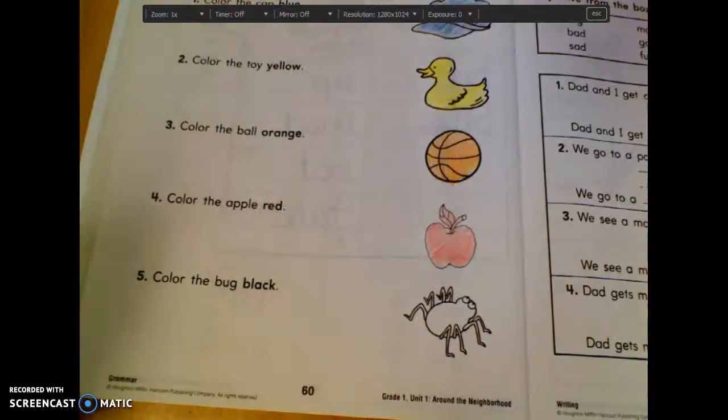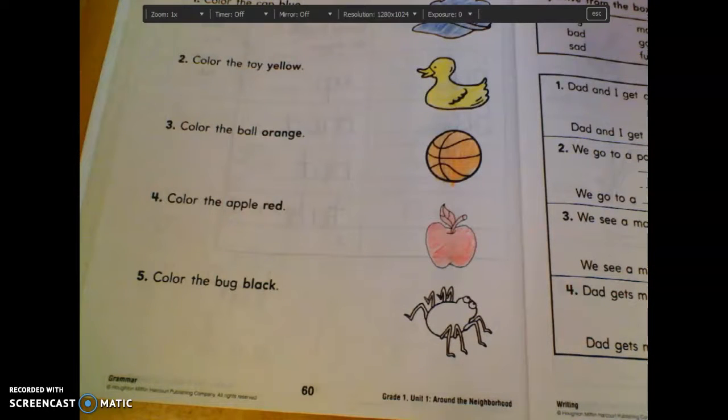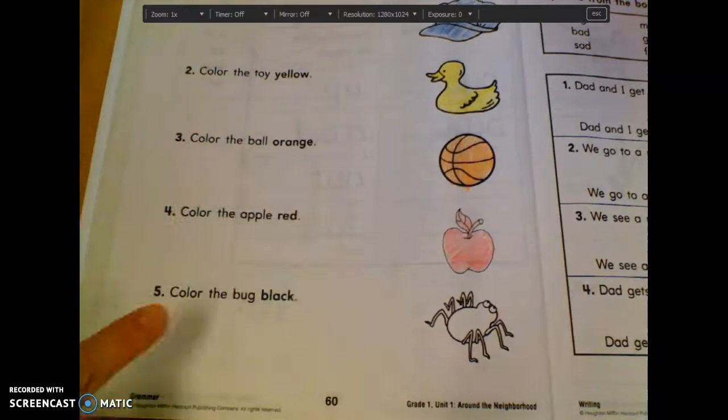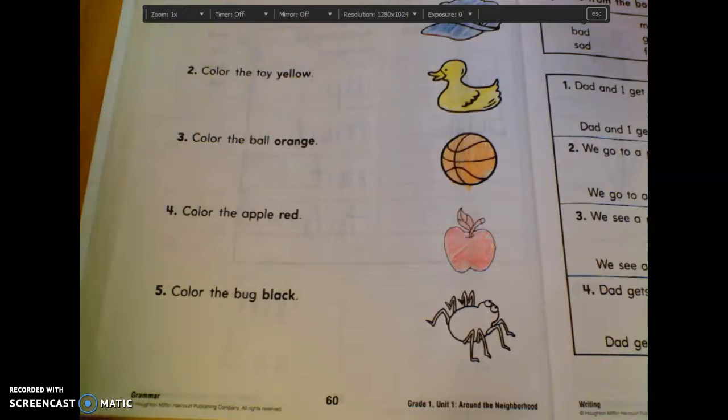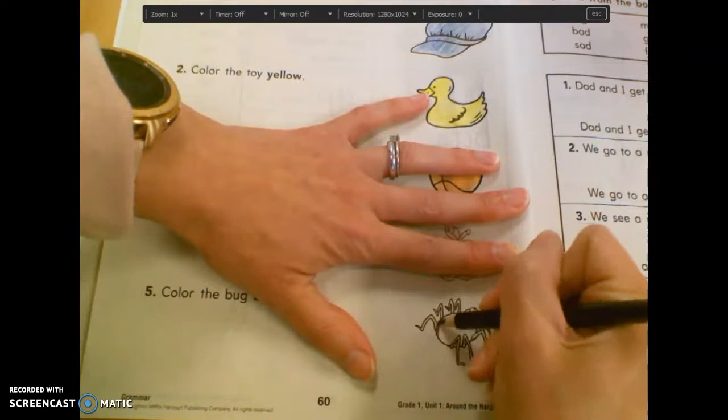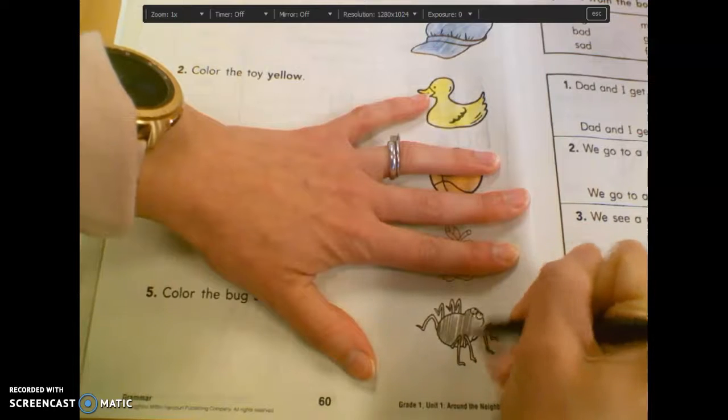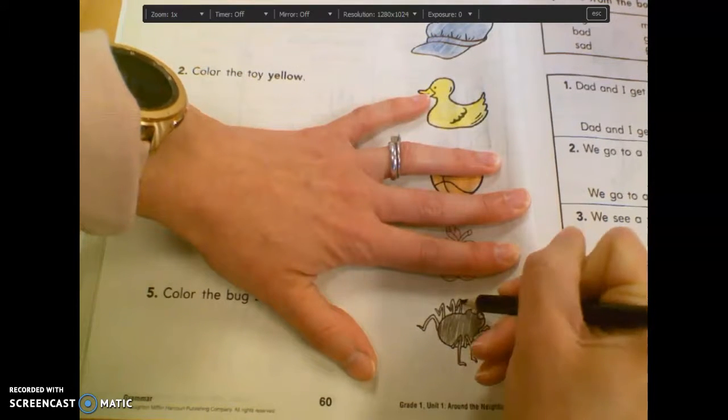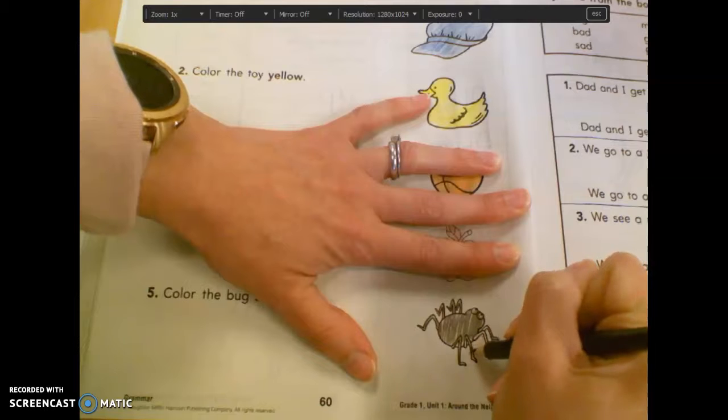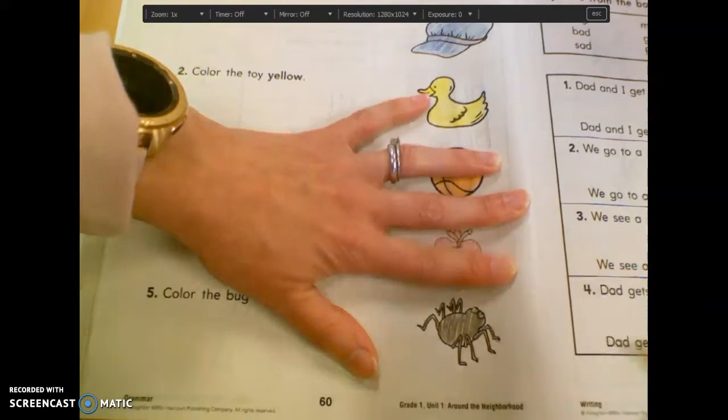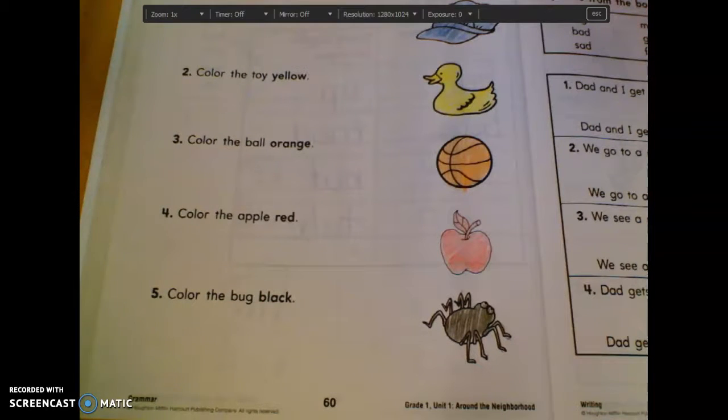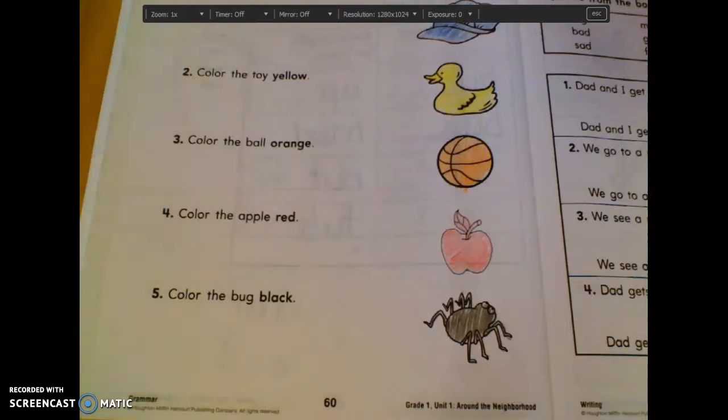The last one. Number five. What does number five say? Amelia? What does the sentence say, though? It doesn't say that. Color. That's color. They all start with the word color. Color the bug black. You're going to color the bug black. It is a spider, yeah. All right. Finish up with those coloring, then we're going to move on very soon. I'm going to give you another minute or two to color.